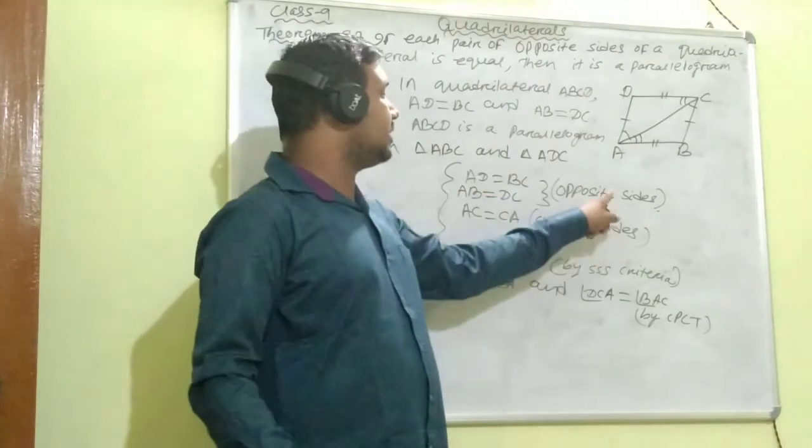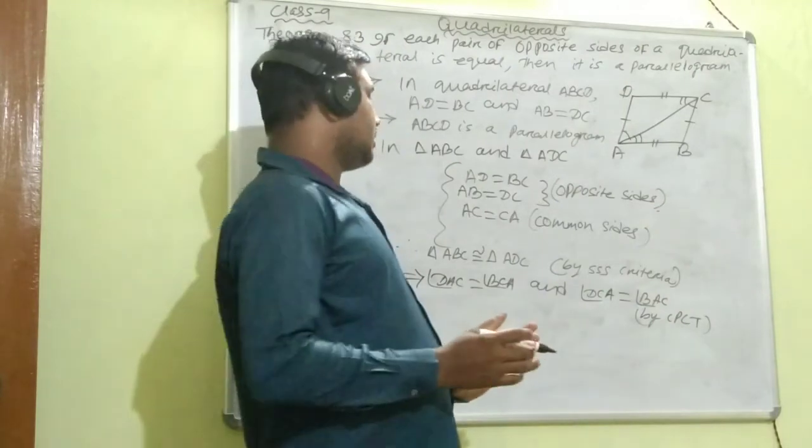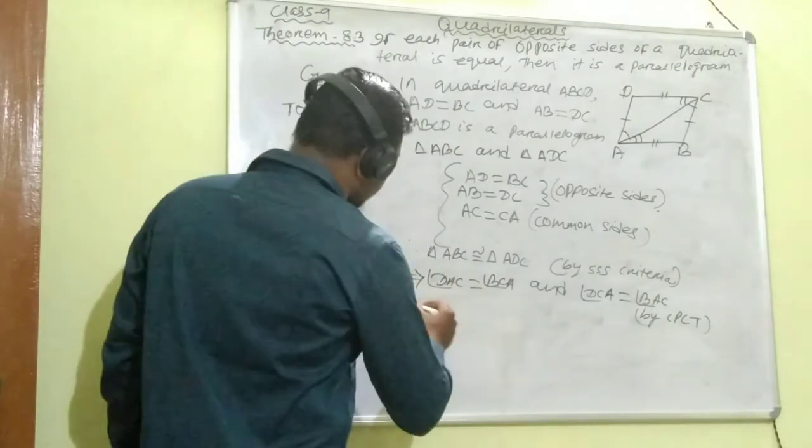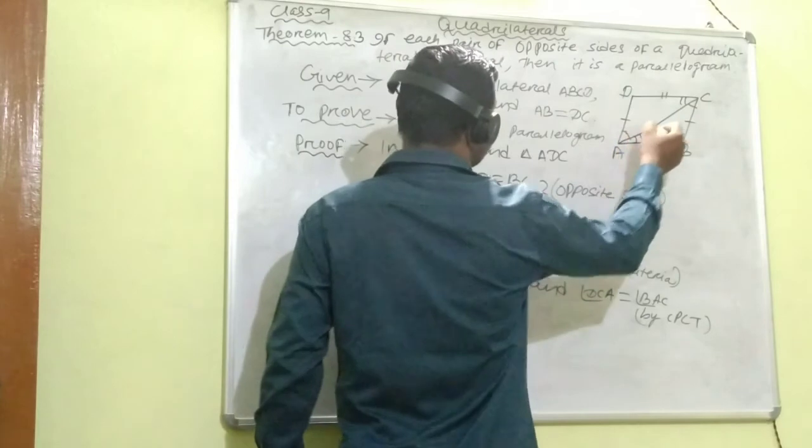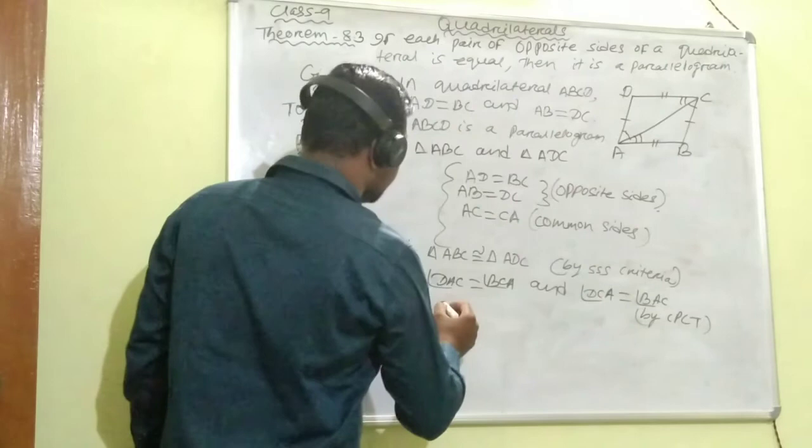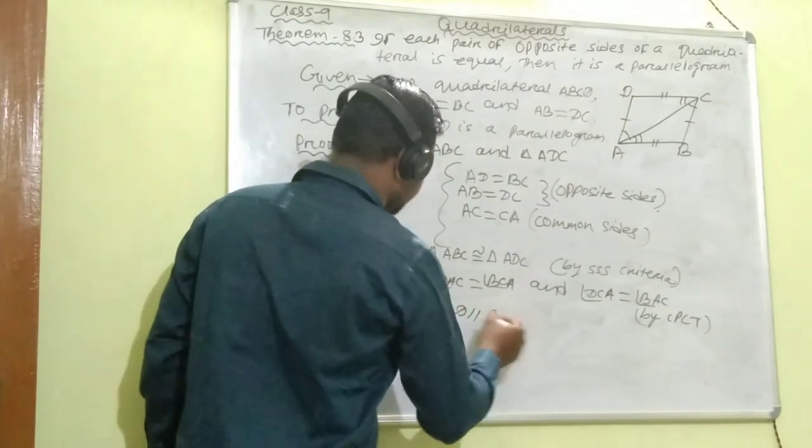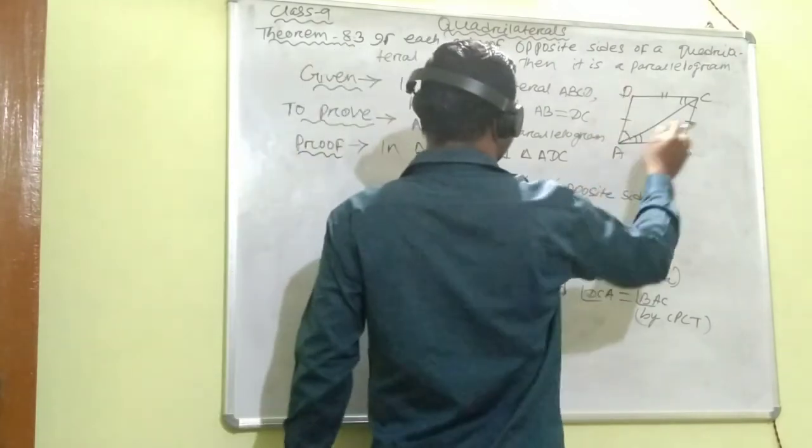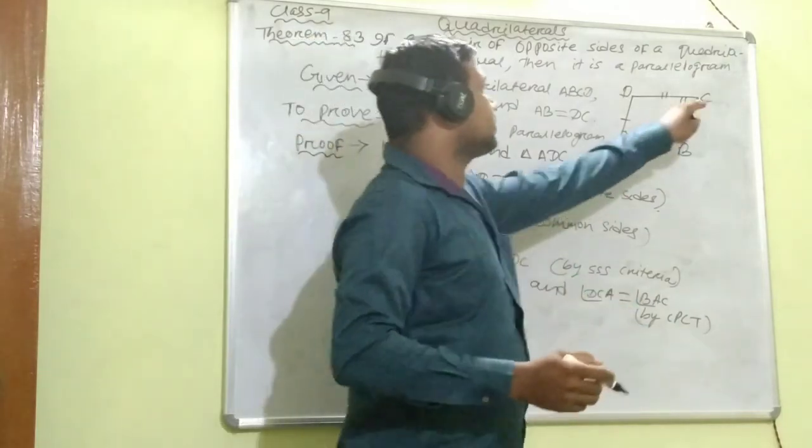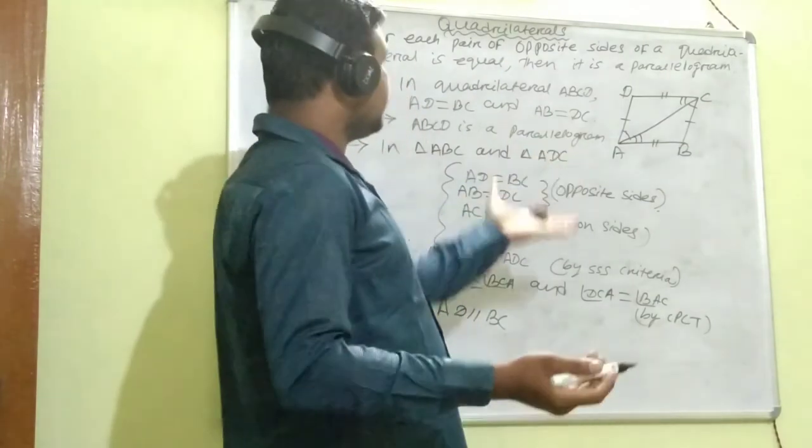Now angle DAC equals angle BCA, that means AD parallel to BC, because AD and BC are two lines intersected by the transversal AC such that the alternate angles are equal. Therefore, AD parallel to BC.